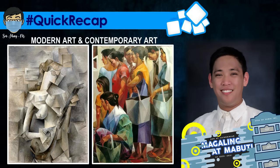Now look at the picture on the screen. Makikita natin ang dalawang produkto ng sining sa magkaibang panahon. Ang nasa kaliwa ay produkto ng modern art at ang nasa kanan naman ay produkto ng contemporary art. As you observe, halos magkamuka lamang sila — halos pareho ng disenyo, halos pareho ng techniques. But ang pinagkaiba nila ay ang mensahe na ipinaparating sa atin. Modern art has something to do with techniques and styles, focusing on the strategies used by the artists. But in contemporary art, regardless of the techniques and design, ang mahalaga ay ang mensahe na may kinalaman sa ating lipunan.